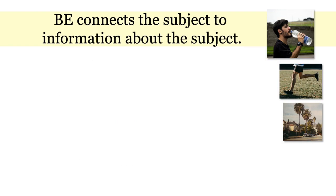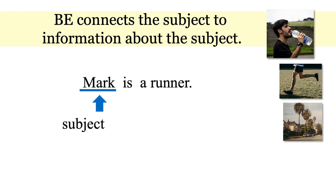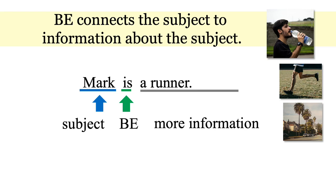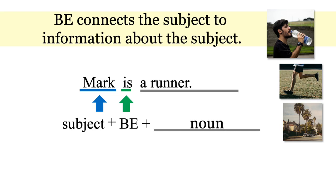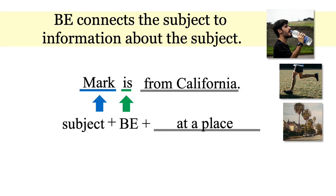BE connects the subject to information about the subject. Here is Mark again. Mark is a runner. Mark is the subject. IS is the BE verb, and a runner is more information about Mark. BE is the verb that connects the information to the subject when there really isn't any action. Here the more information is a noun — runner. But we can change the sentence: Mark is thirsty — the information is an adjective. Mark is at a park — that information is a place. Mark is from California — also a place. BE connects the subject to information about the subject when there isn't really an action happening.